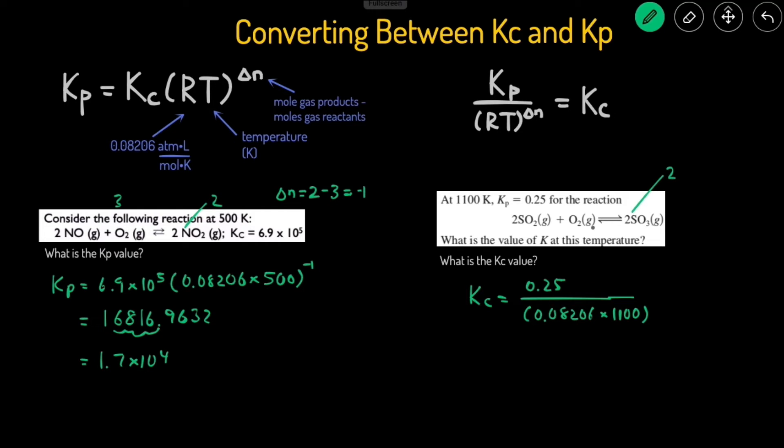So delta N in this case, well, we have 2 moles of gas on the product side, and we have 2 plus 1 mole of gas, so a total of 3 moles of gas on the reacting side. So once again, our delta N is just going to be 2 minus 3, which is equal to negative 1.